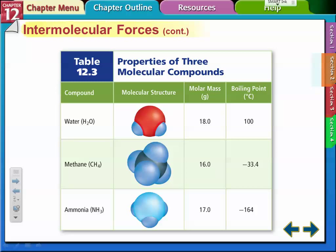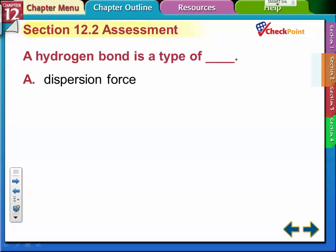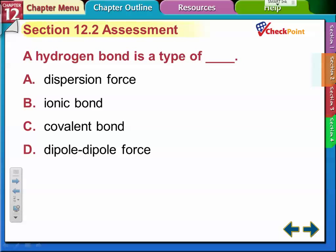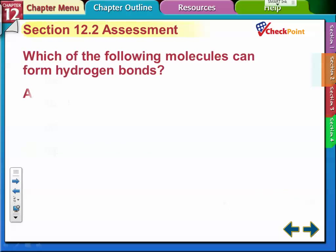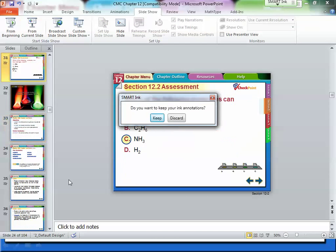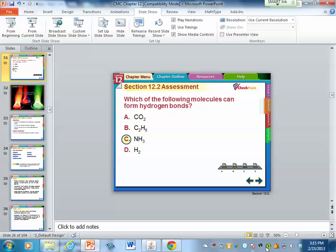Hydrogen bonds are a special type of dipole-dipole force. There are three elements that form hydrogen bonds. What were they? They were oxygen, fluorine, and nitrogen. That's it, short video on section 12.2. Answer the questions on the form below.